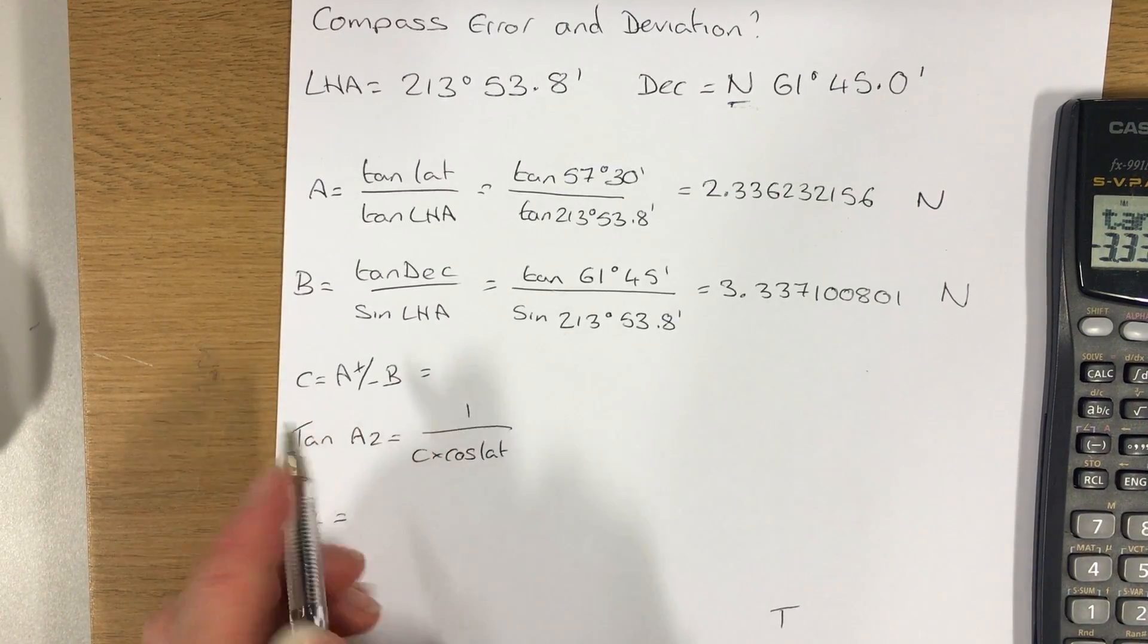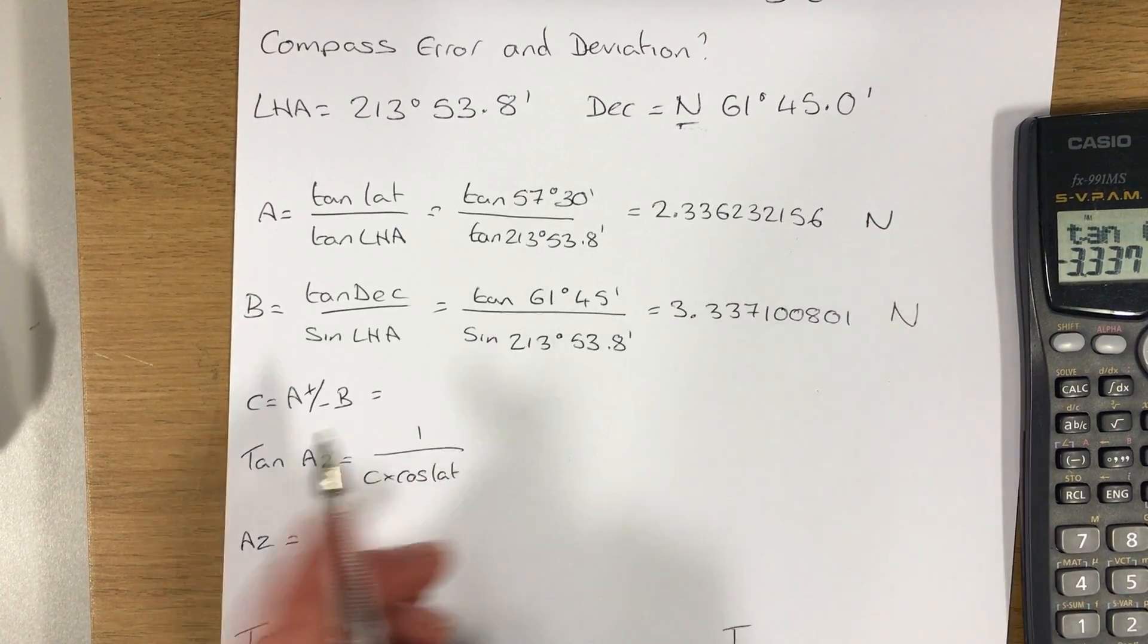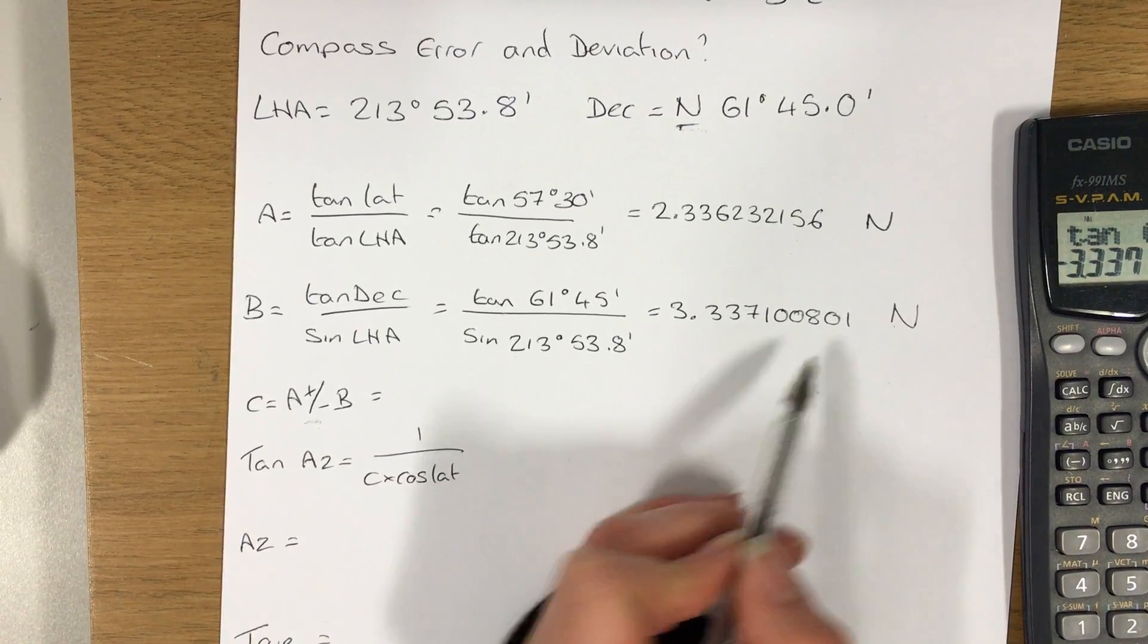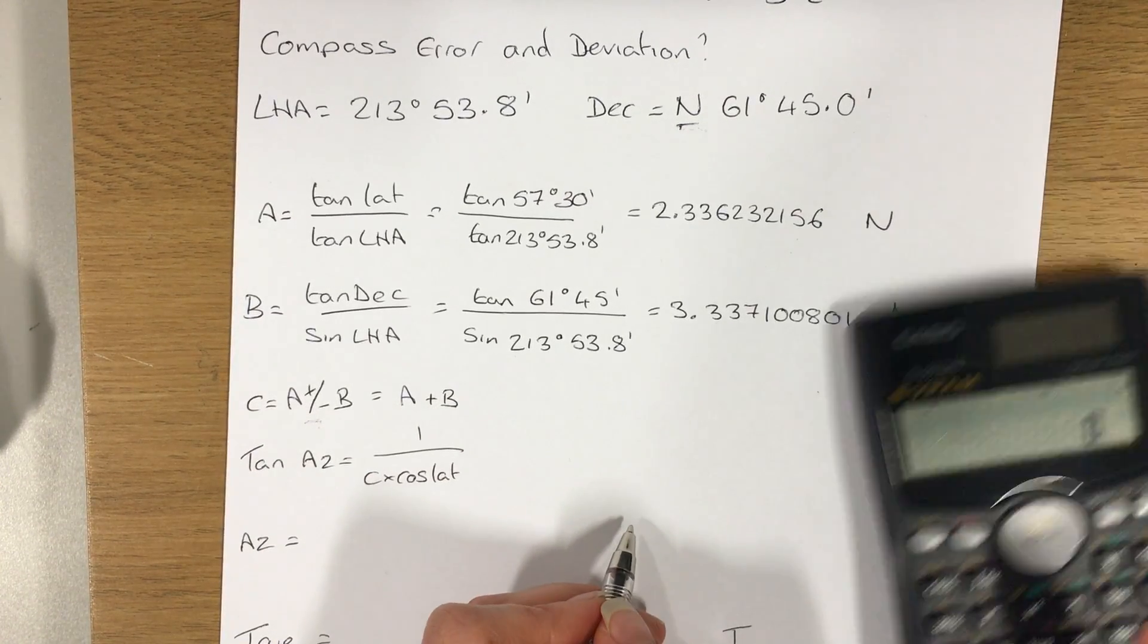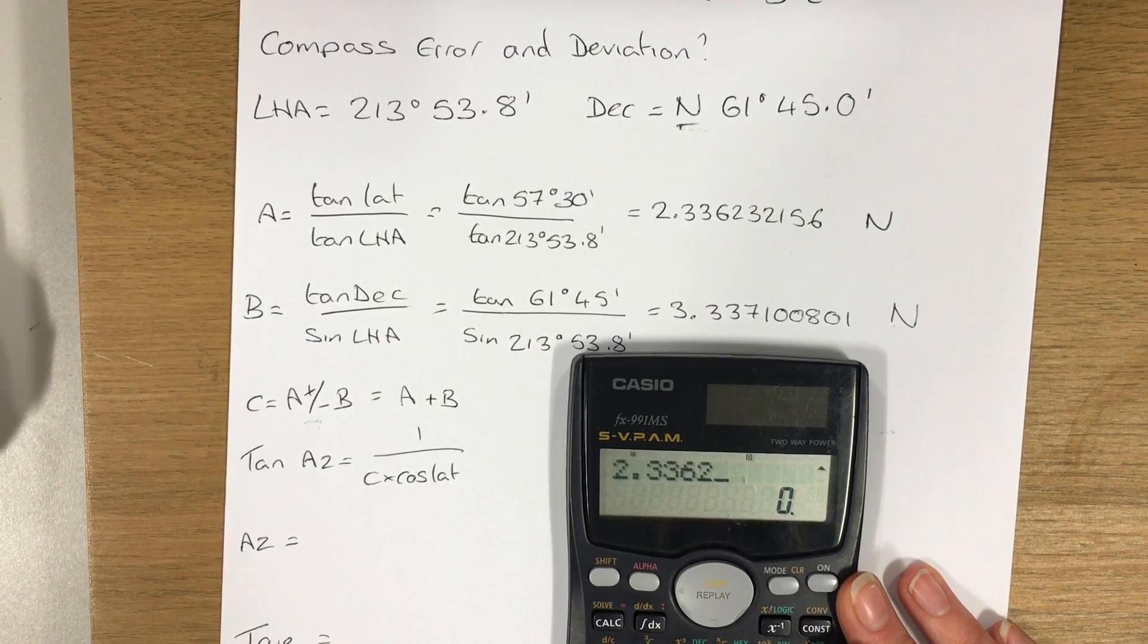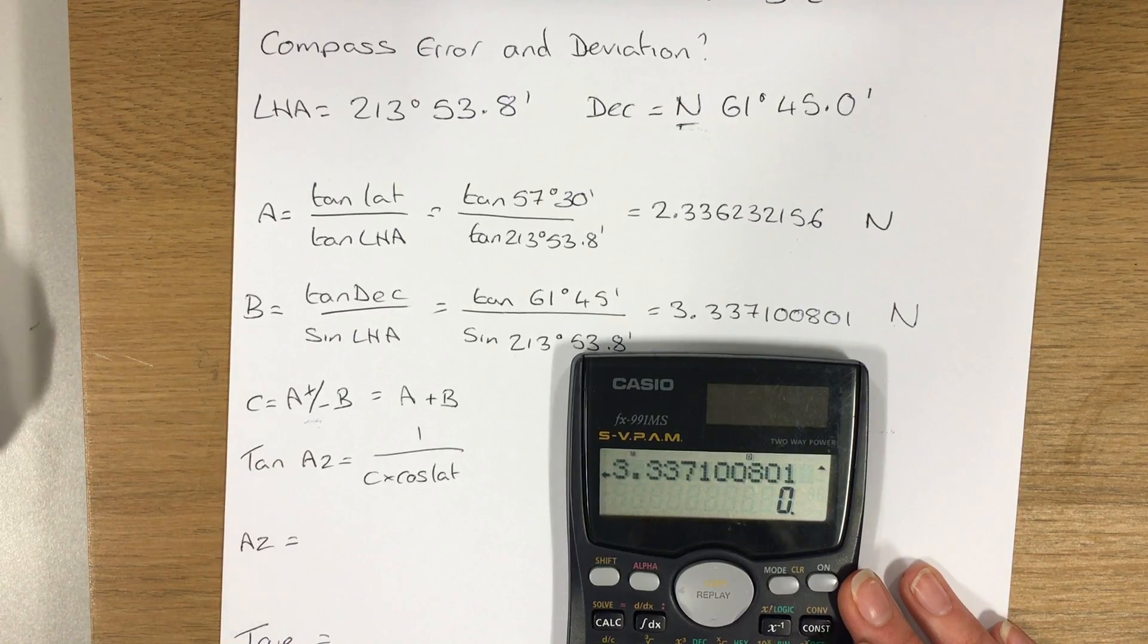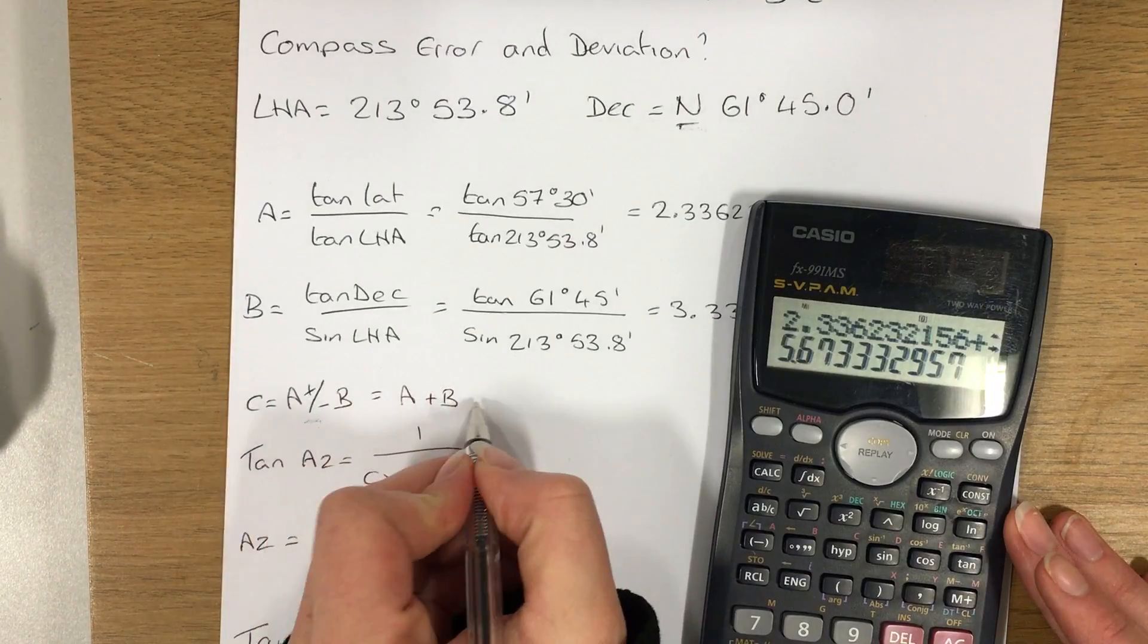So now I can move on to C. C is equal to A plus or minus B. If A and B are the same names, that is plus. If A and B are different names, it's subtract. In this case, they're the same names, so C is going to be equal to A plus B. So onto my calculator to get me C. So if I write that value down.